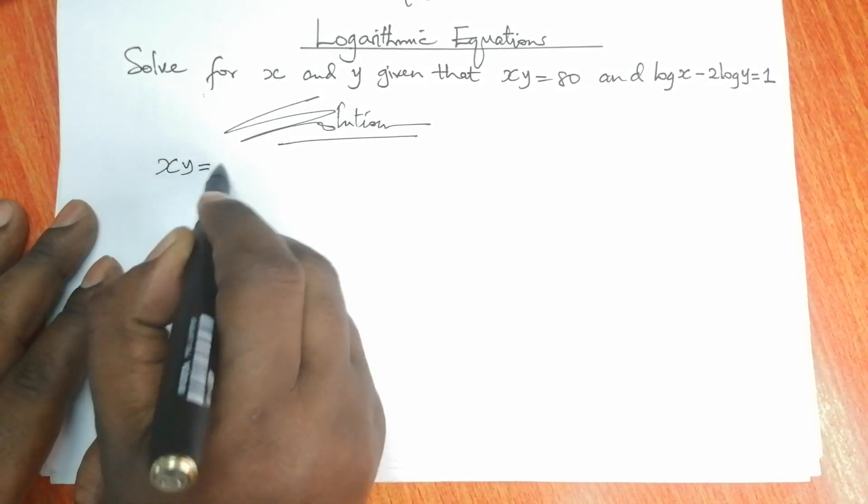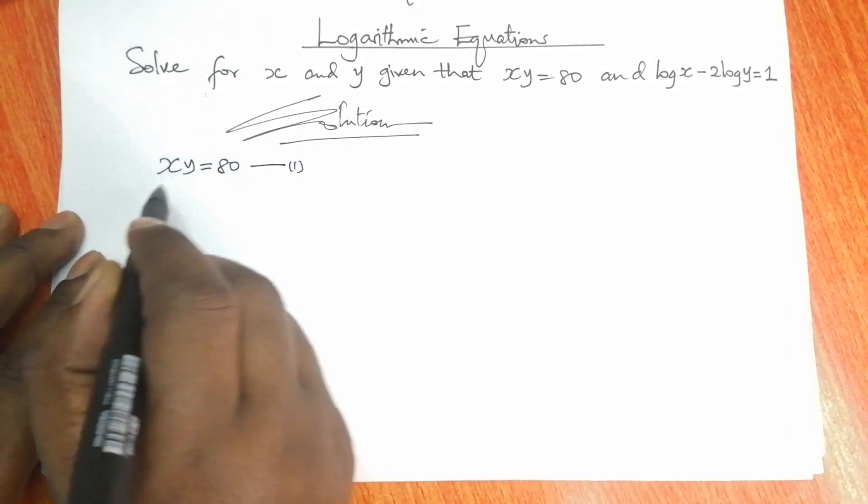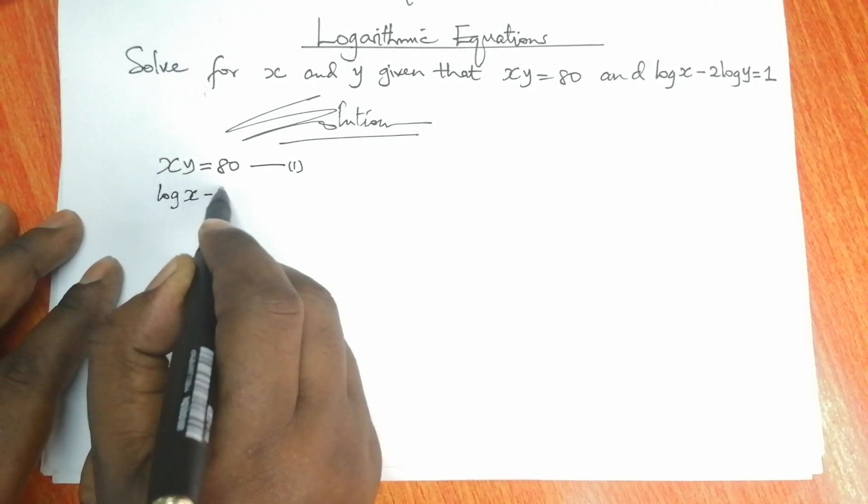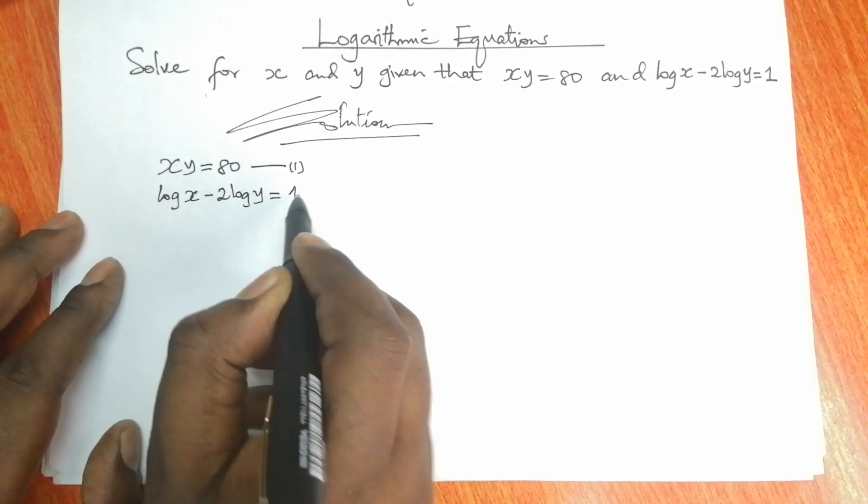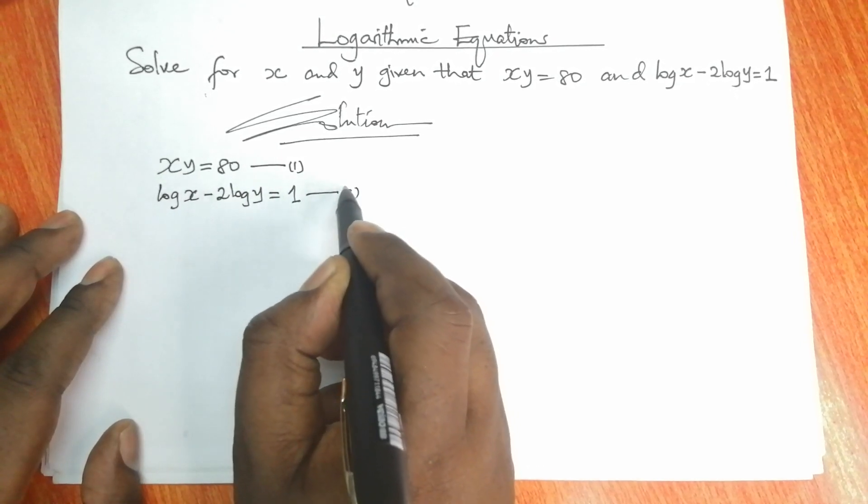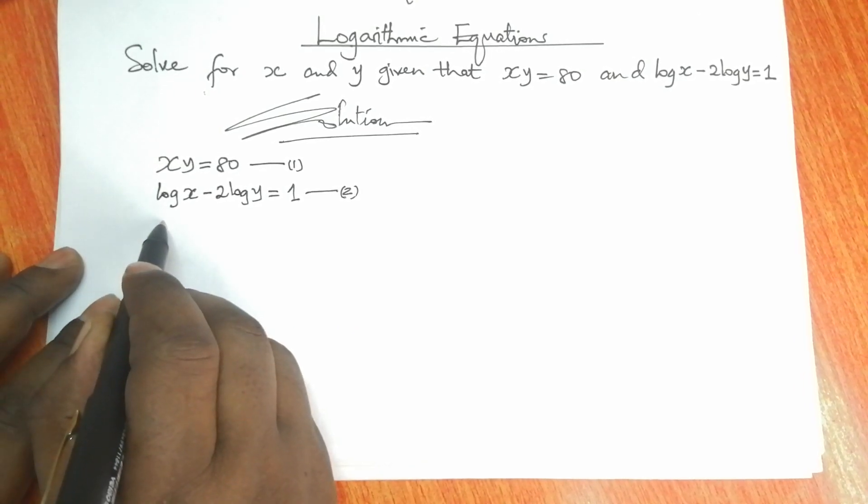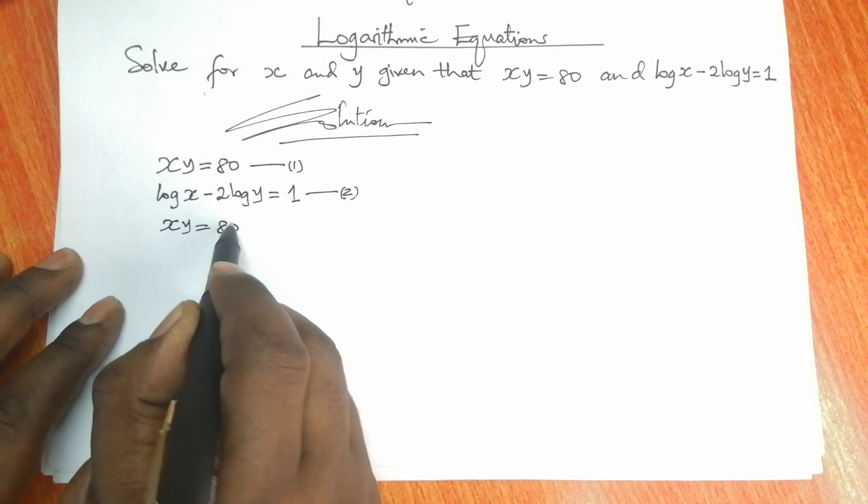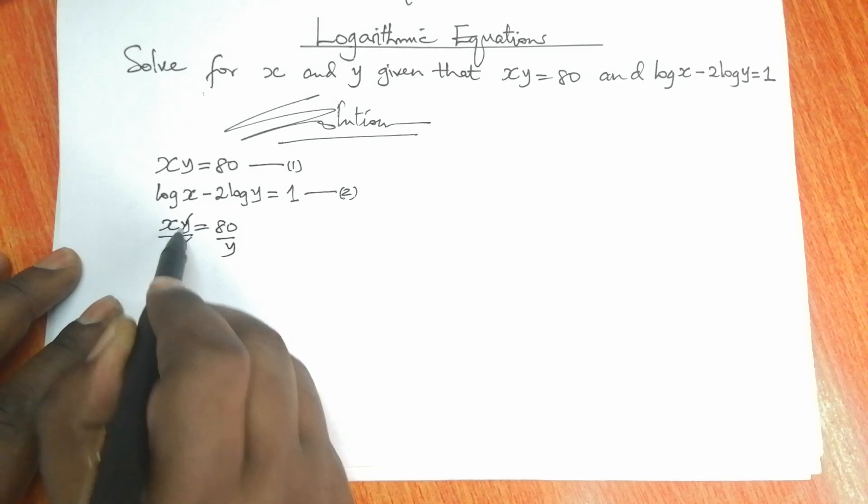xy is equal to 80, let's call that equation number 1. And log x minus 2 log y is equal to 1, let's call that equation number 2. From equation 1, we can make x the subject. If you make x the subject, we can divide both sides by y and therefore x will be equal to 80 over y.